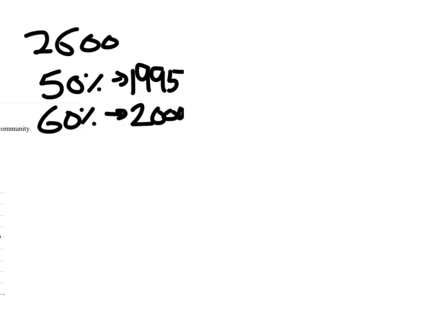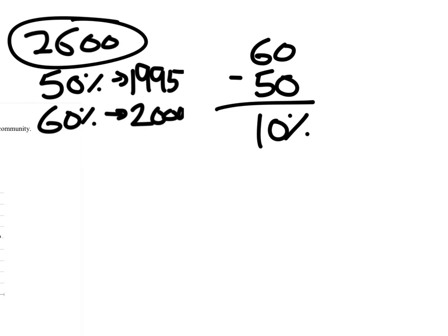Let's take a look. If we do this percentage-wise, we've got 60% minus 50%, which tells us the difference is 10%. And then we're just looking for 10% of that 2,600.